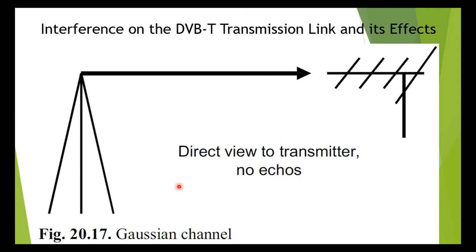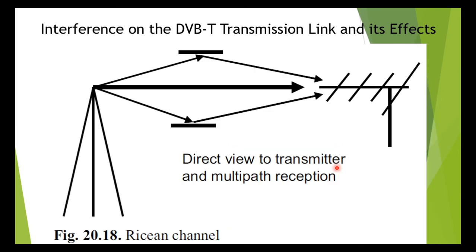In the ideal case, exactly one signal path arrives at the receiving antenna. The signal is then only attenuated to a greater or lesser extent and is merely subjected to AWGN — additive white Gaussian noise. This channel with a direct view of the transmitter is called the Gaussian channel and provides the best condition of reception for the receiver, as shown in figure 17. This channel with a direct line of sight and a defined number of multiple echoes, which can be simulated as a mathematical channel model, is also called the Gaussian channel — figure 18.